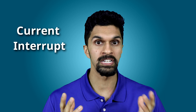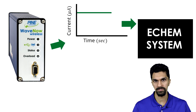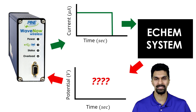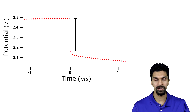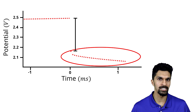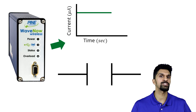Not all potentiostats have EIS capabilities, and EIS functionality is a bit more expensive, so there are plenty of DC techniques that can be used to determine the solution resistance. One such technique is current interrupt. In the current interrupt technique, a potentiostat applies a constant current to the electrochemical system and we measure the potential. The potentiostat then disconnects the counter electrode from the system, giving you a graph that shows a sudden drop in the potential followed by a slow and gradual decay.